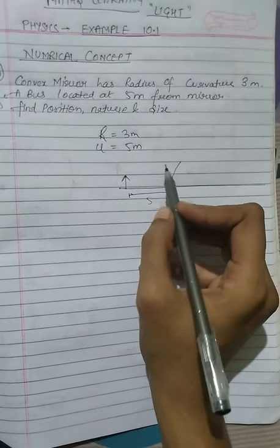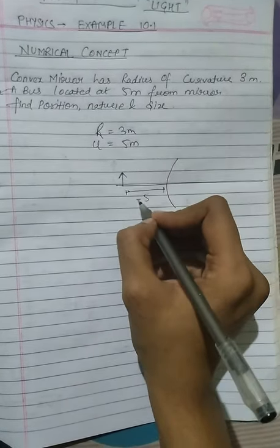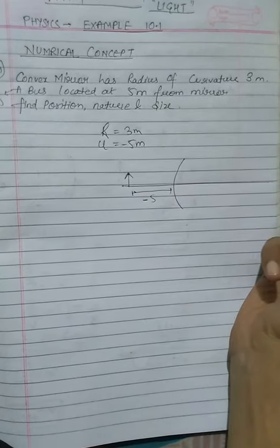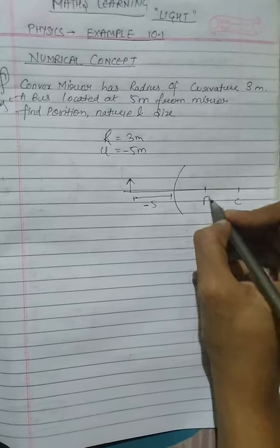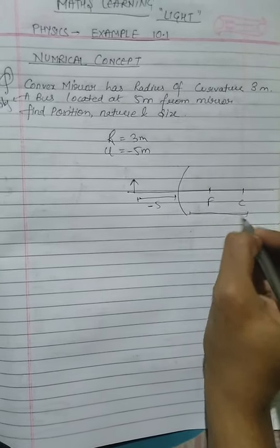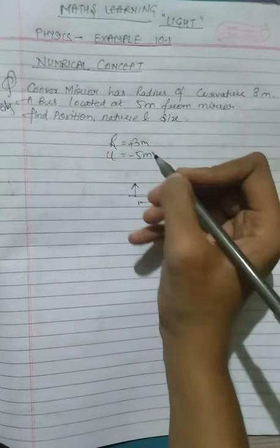Now tell me, is this the left side distance or the right side? Left side is minus. Radius of curvature here is on the right side, so this is positive.